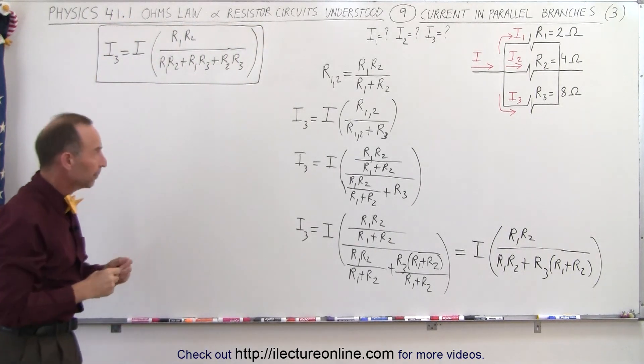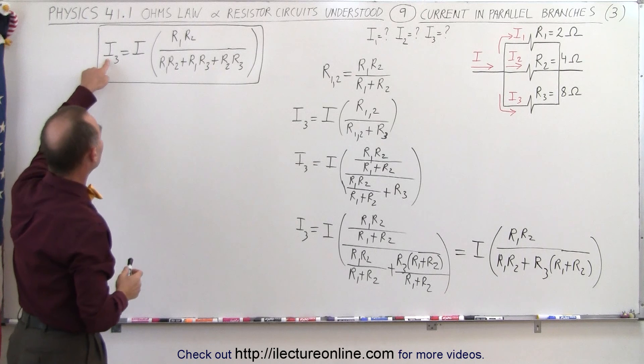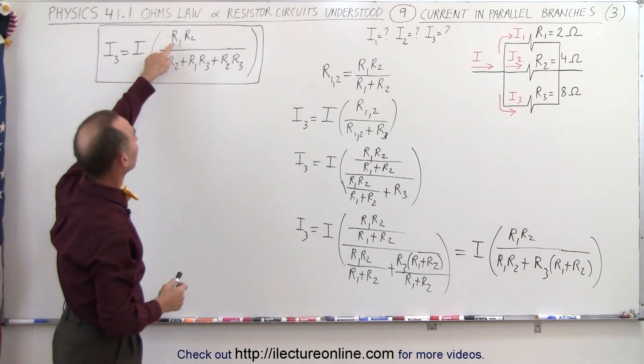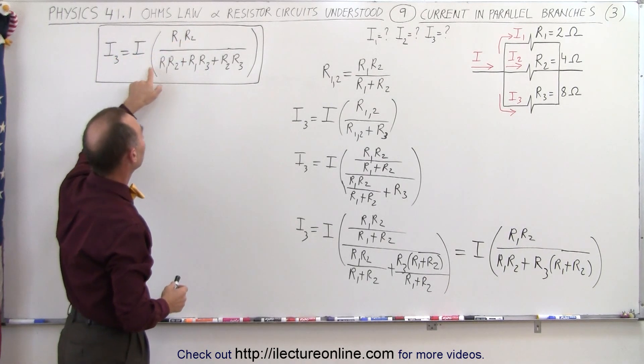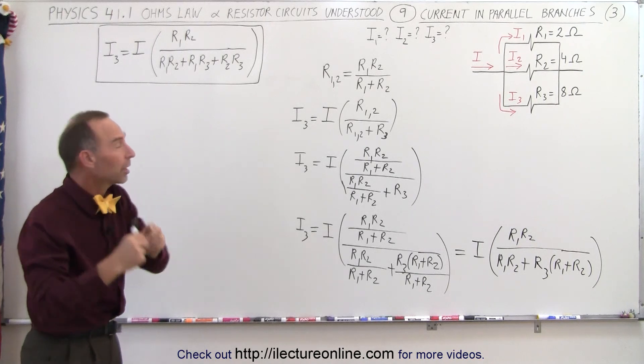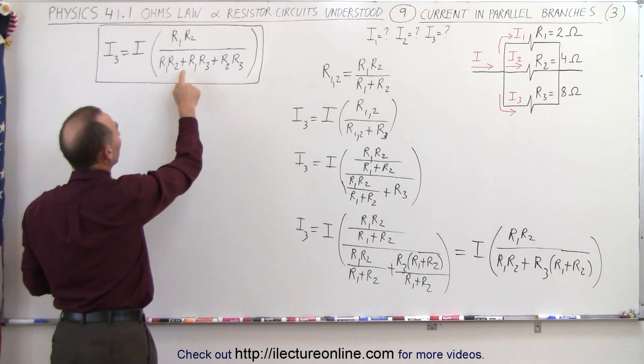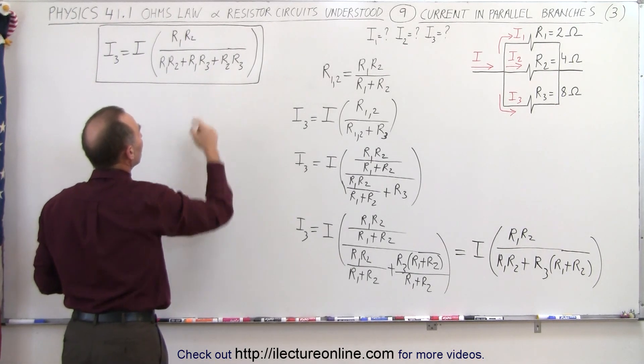Now here we see a pattern. Notice, if we're looking for I3, in the numerator we get the product of R1 times R2. In the denominator, we have every one of the combinations: R1 with R2, R1 with R3, and R2 with R3. So if we expand that to the other two currents,